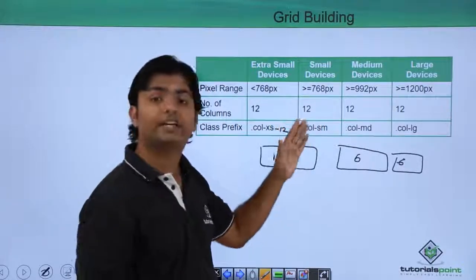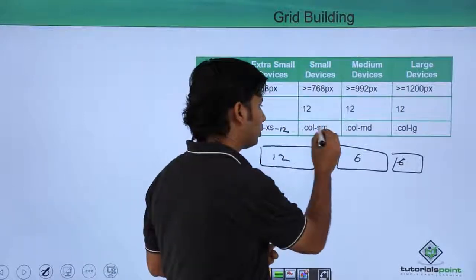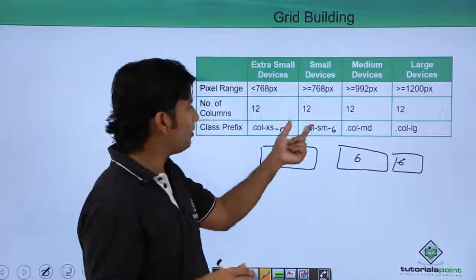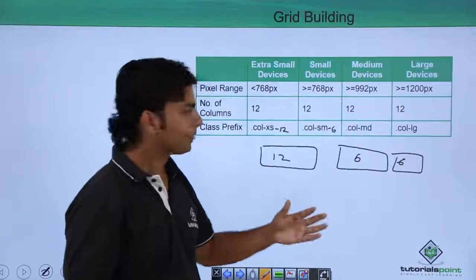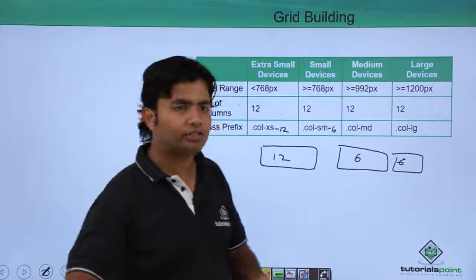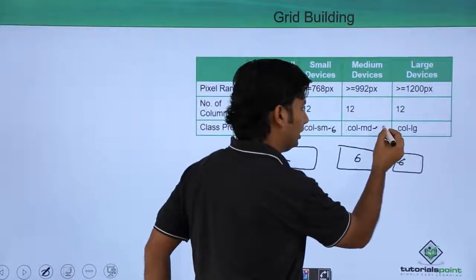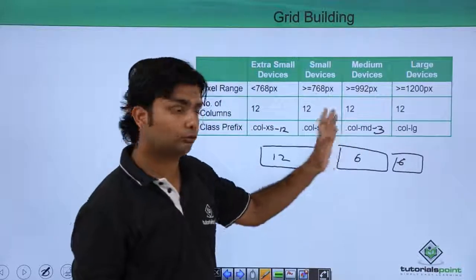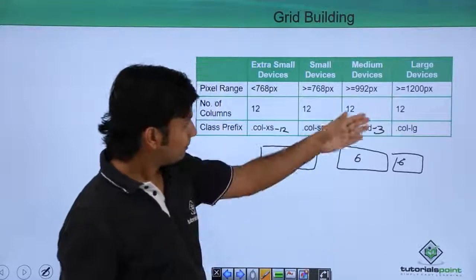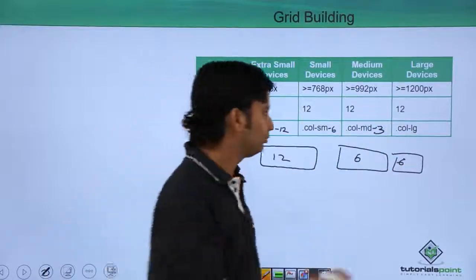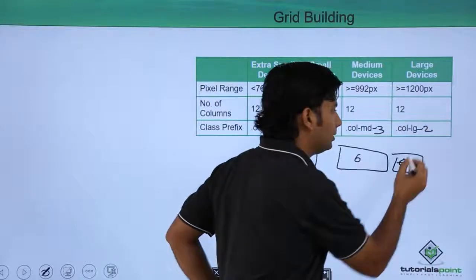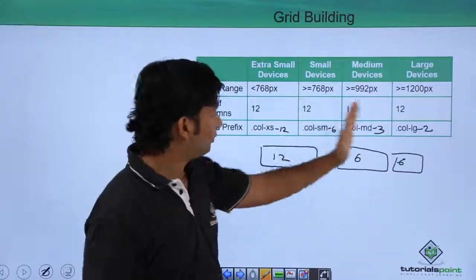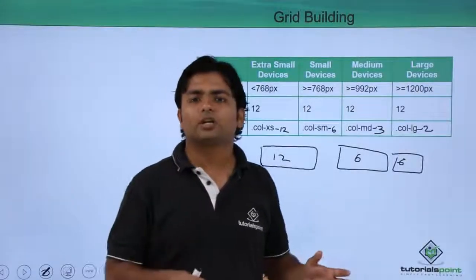For a small device like a tablet, you use col-sm-6 to dedicate six columns out of 12 for a particular div. For medium devices like a 14–15 inch laptop, you use col-md. For large monitor sizes you use col-lg, and you pass how many columns you want that div to use. The same design will look different across screen sizes.